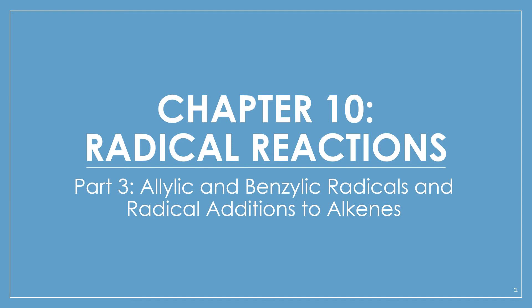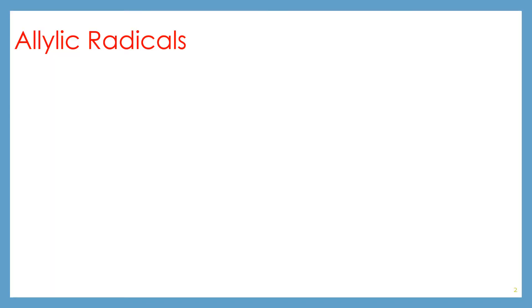Chapter 10, Part 3: Allylic and Benzylic Radicals and also Radical Additions to Alkenes. Let's talk about what we mean by allylic radical. When we say allylic radical, we are talking about a radical that is formed in the allylic position.